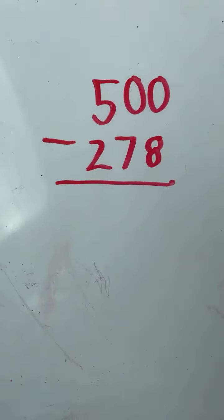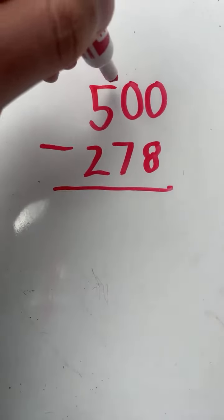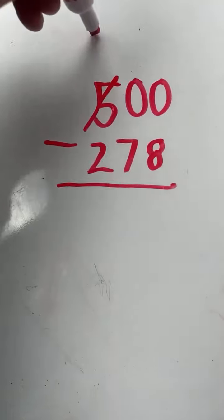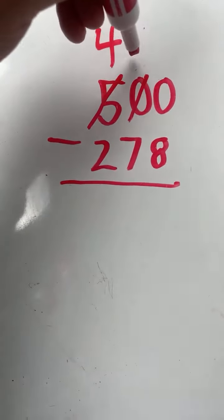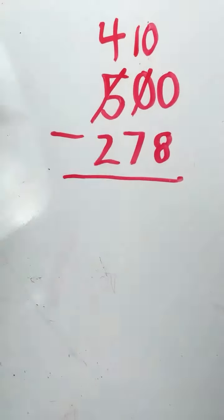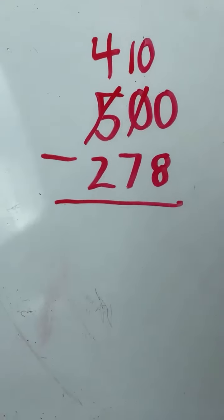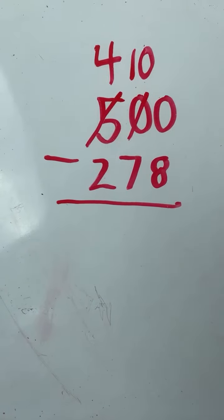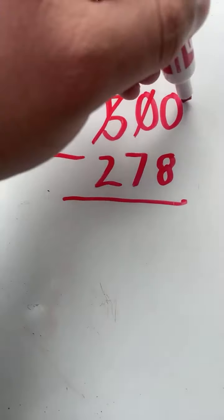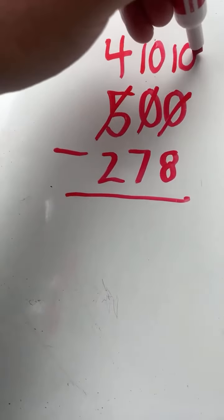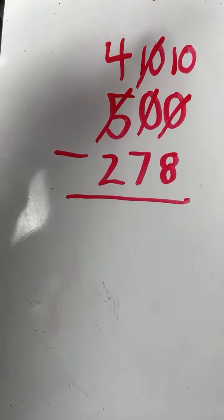You also cannot start out with zero and take away eight, so we need to regroup. The five is going to become a four, the zero is going to become a ten. We also need to regroup in the ones place, so that zero in the ones place becomes a ten and we have to take away one in the tens place.